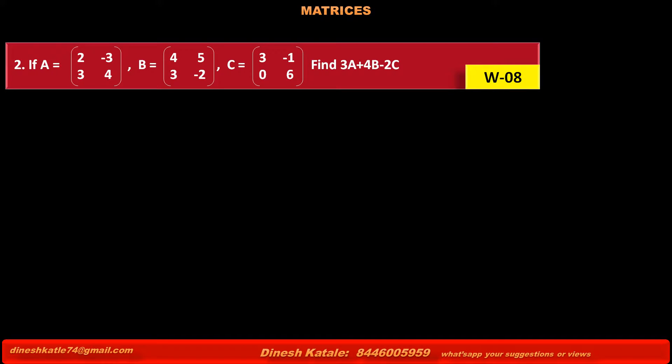Problem 2: If matrix A is equal to [2, -3; 3, 4], matrix B is equal to [4, 5; 3, -2], and matrix C is equal to [3, -1; 0, 6], find 3A + 4B - 2C.